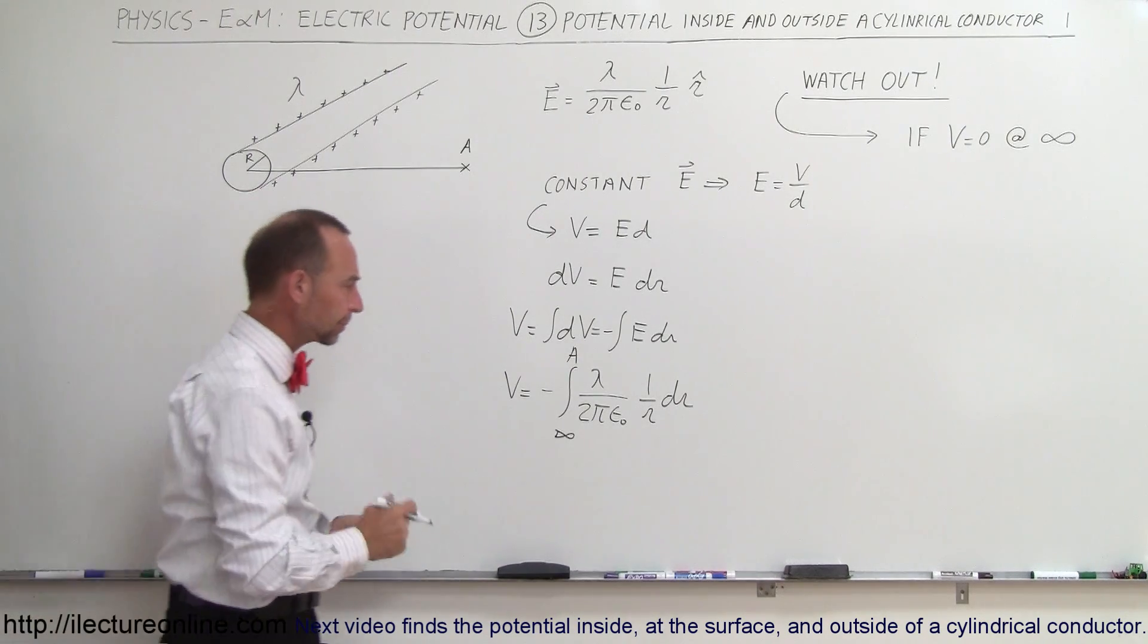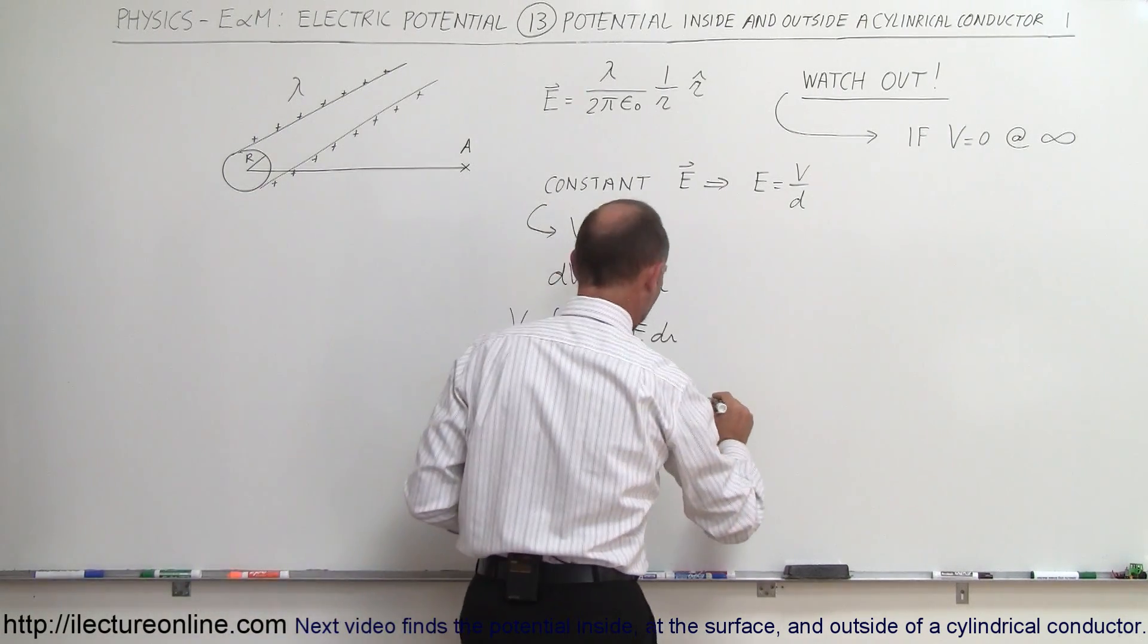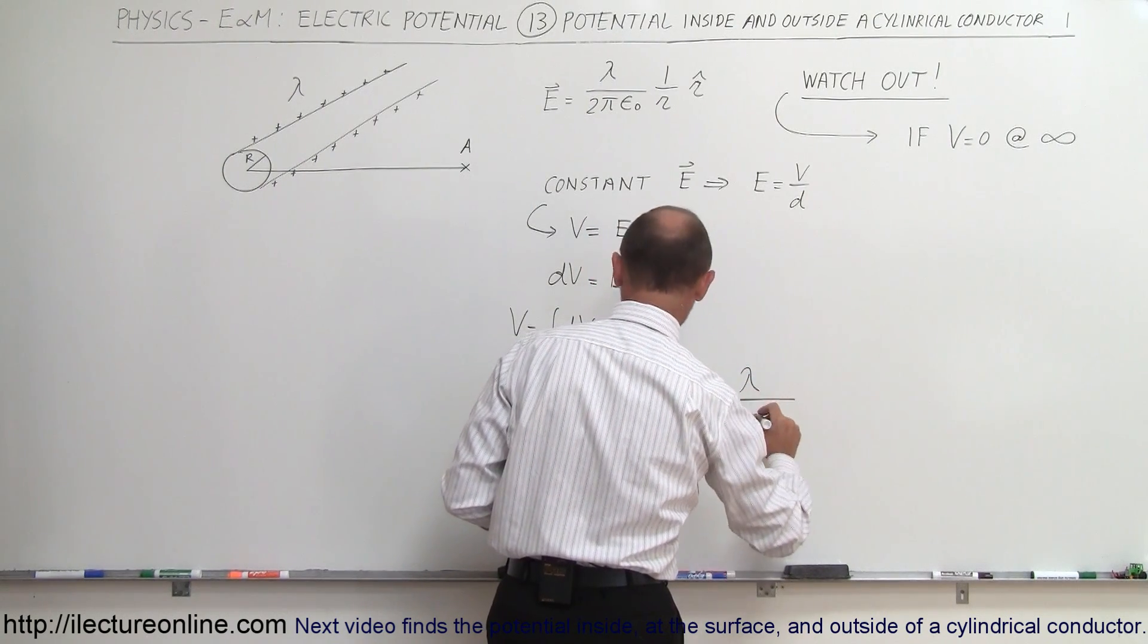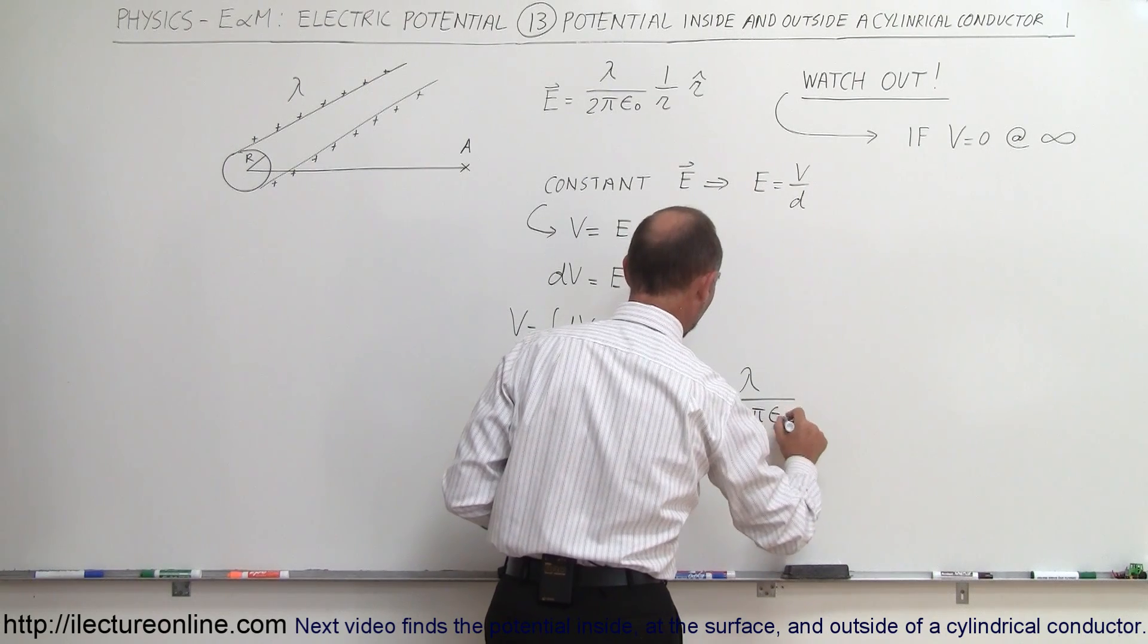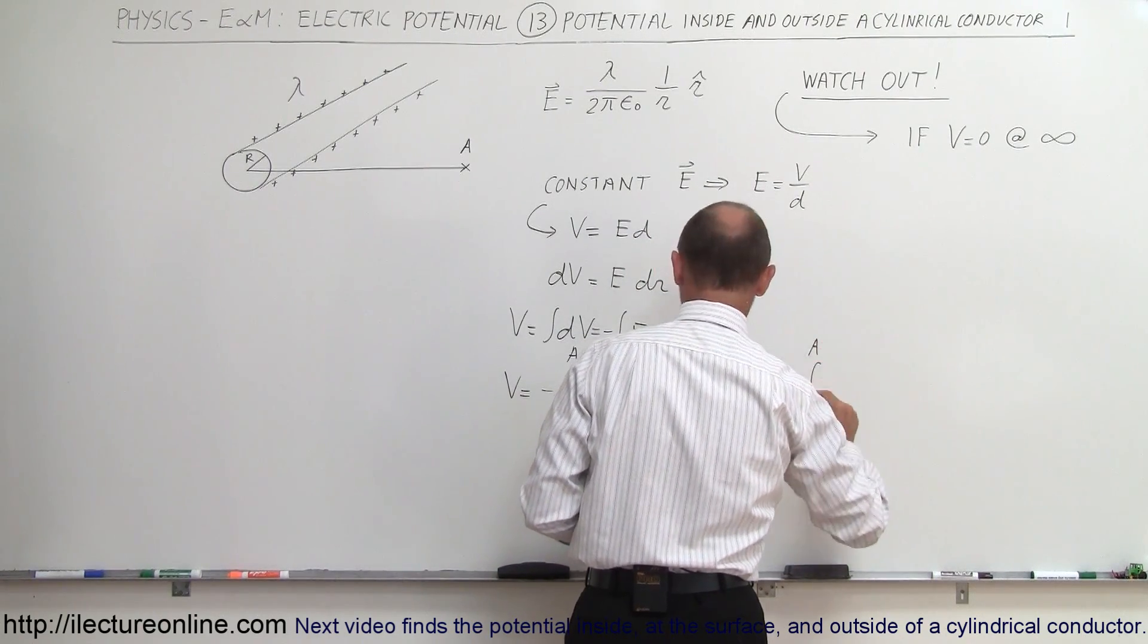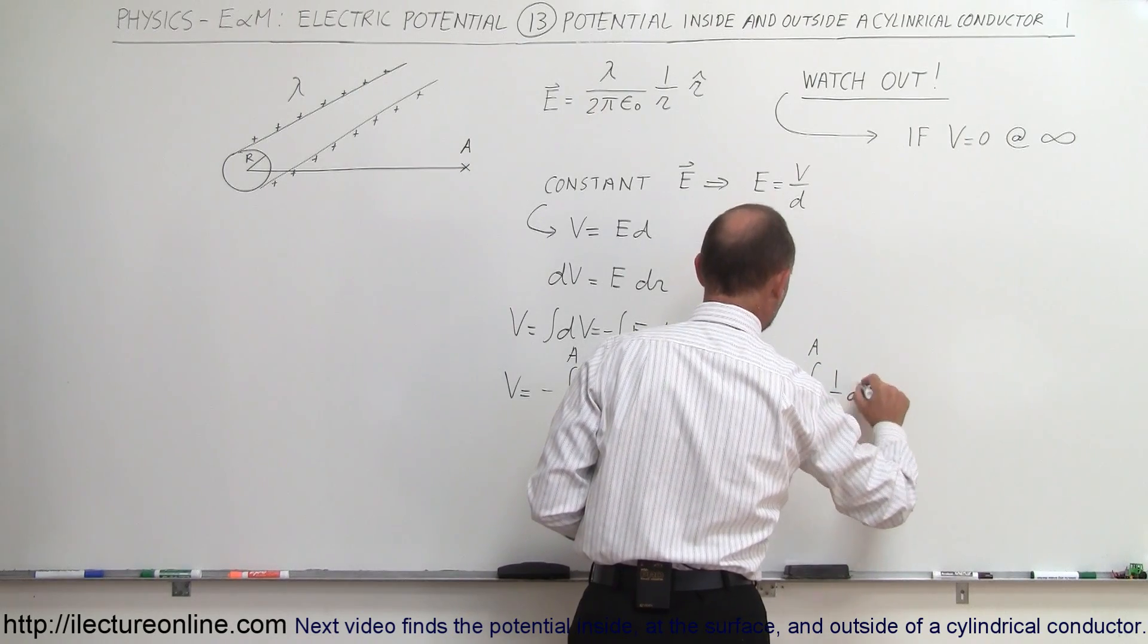Alright, if we do that, all this is a constant that can come out, so this is equal to minus the linear charge density divided by 2π epsilon nought times the integral of 1 over r dr.